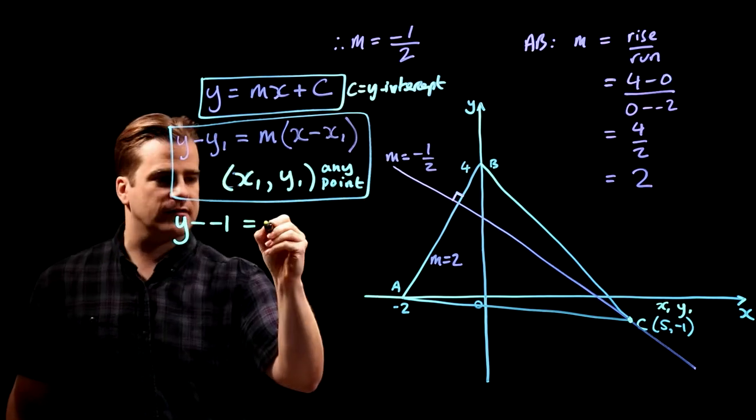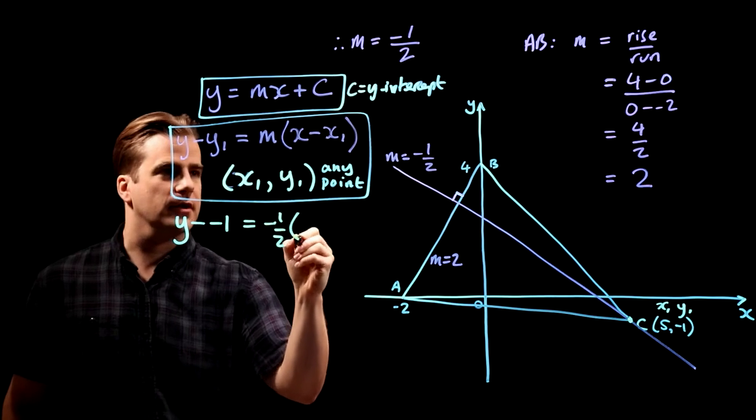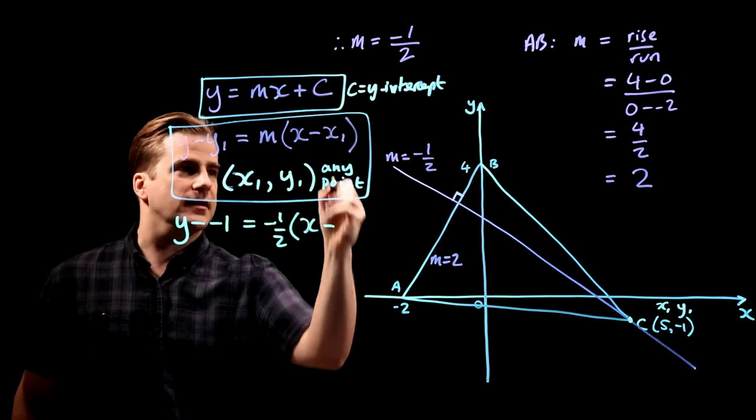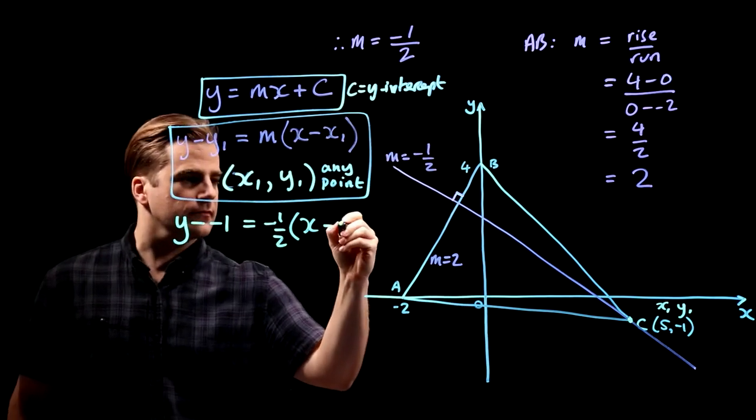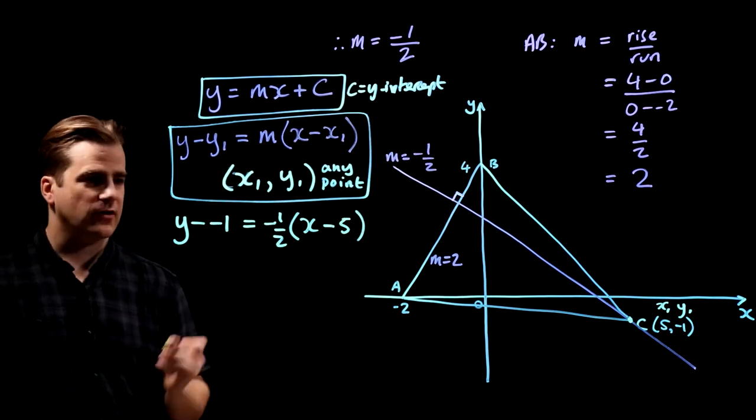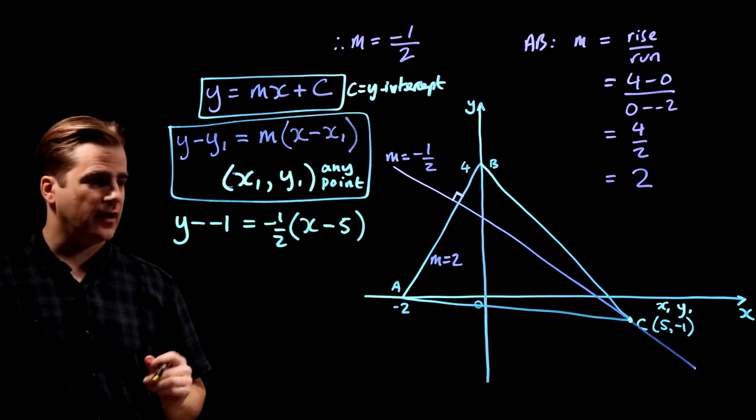So y minus minus 1 equals m. We know the gradient, it's minus a half x minus x1. Our x1 is 5. There, we've won. We've done it. We've just got to neaten that up and we've got the answer.